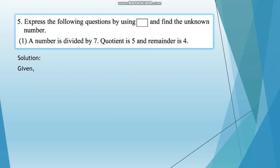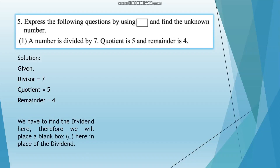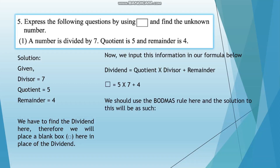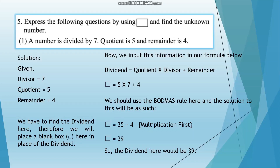Here we list the information: the divisor is 7, the quotient is 5, and the remainder is 4. We have to find the dividend, so we place a blank box in place of the dividend in the formula and get: blank box equals 5 multiplied by 7 plus 4. Using the BODMAS rule, we multiply 5 and 7 first, giving blank box equals 35 plus 4. So the dividend is 39.